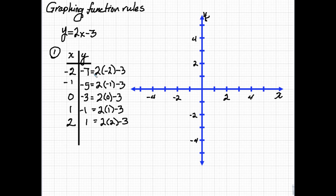Okay, so now we have our values, and our values are negative 2, negative 7, negative 1, negative 5, 0, negative 3, 1, negative 1, and 2, 1.